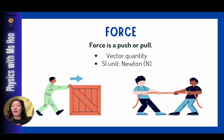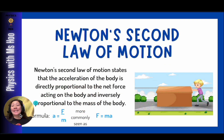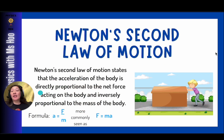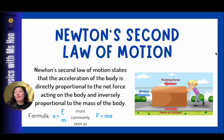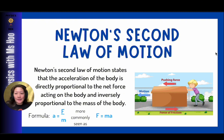Now let's look at the definition of Newton's second law of motion. Newton's second law of motion states that the acceleration of a body is directly proportional to the net force acting on the body and inversely proportional to the mass of the body. Newton did a whole bunch of physical experiments and found a relationship between force, mass, and acceleration, and hence came up with the second law of motion.